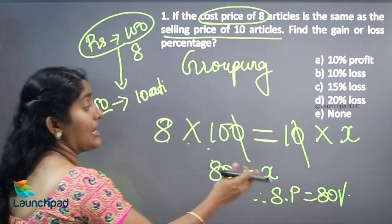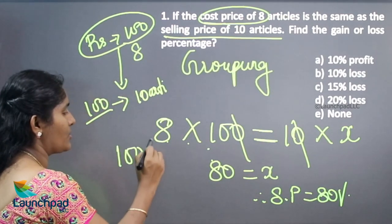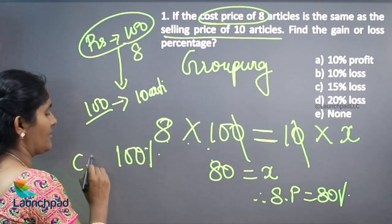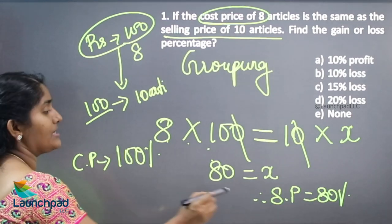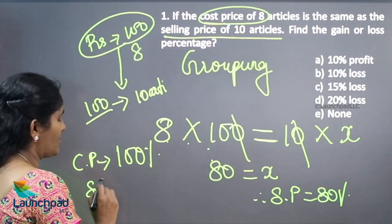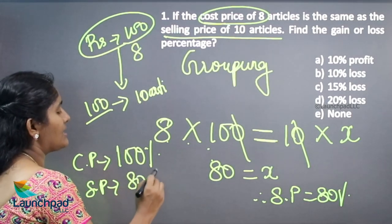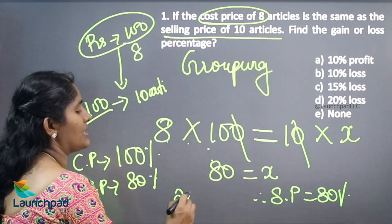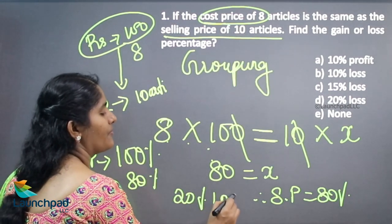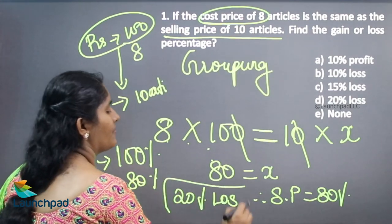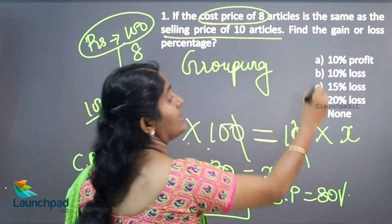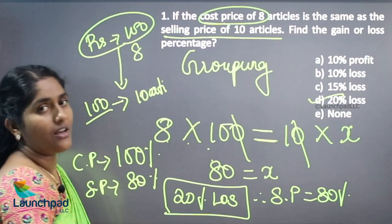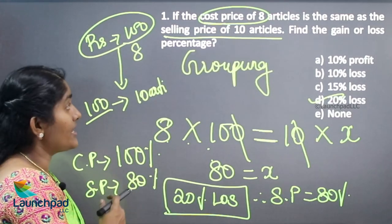Now your loss, what is your loss here? Your cost price always 100 percentage and your selling price is 80 percentage. What is your loss here? 20 percentage is loss. So your answer is 20 percentage loss. So next question.